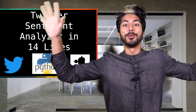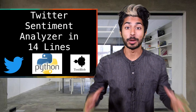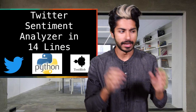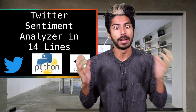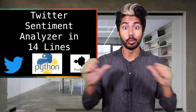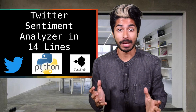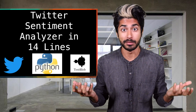Check out the Two Minute Papers YouTube channel for some cool research videos. Hello world, it's Siraj. In this episode, we're going to learn how to write a Python script that uses Twitter to understand how people are feeling about a topic that we choose, using the natural language library TextBlob and just 14 lines of code.